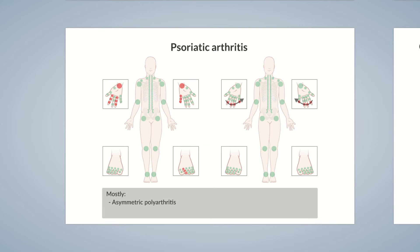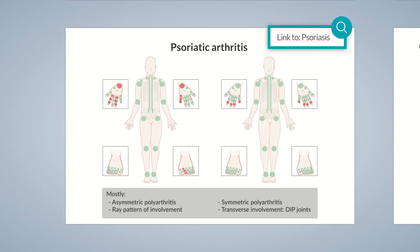There is a classification criterion by Moll and Wright differentiating five types. The most important characteristics to remember are that psoriatic arthritis is an asymmetric or symmetric polyarthritis of the digits in a ray pattern, or transverse involvement of the DIP joints. Arthritis usually begins after skin involvement, with the diagnosis often already known. Enteropathic arthritis, reactive arthritis, and psoriatic arthritis all belong to the spondyloarthropathies, so in individual cases an axial pattern may be observed — most likely unilateral involvement of the ileosacral joint rather than the bilateral involvement seen in axial spondyloarthritis.